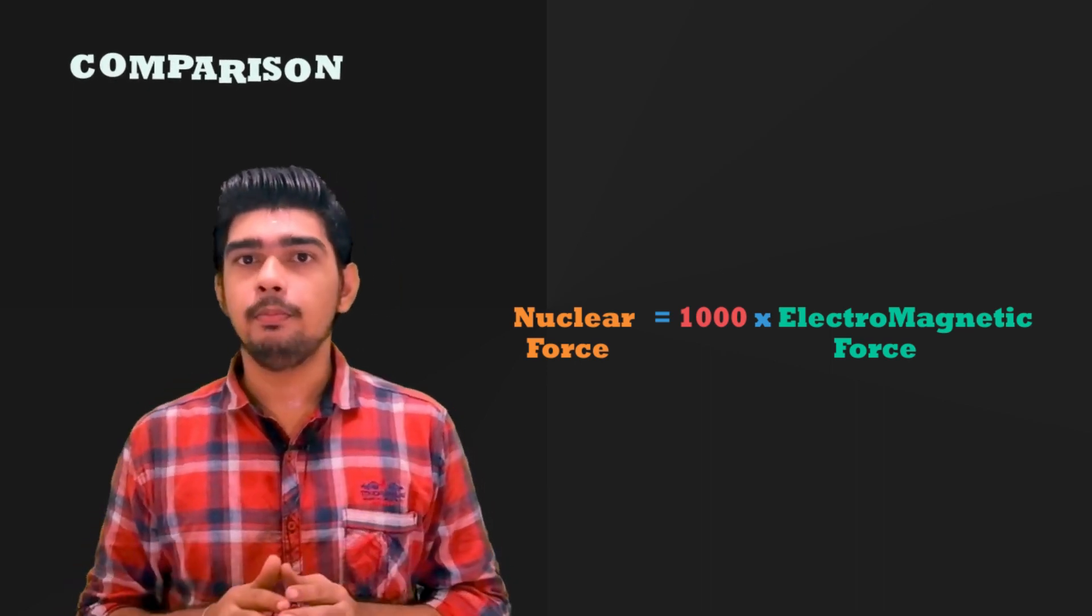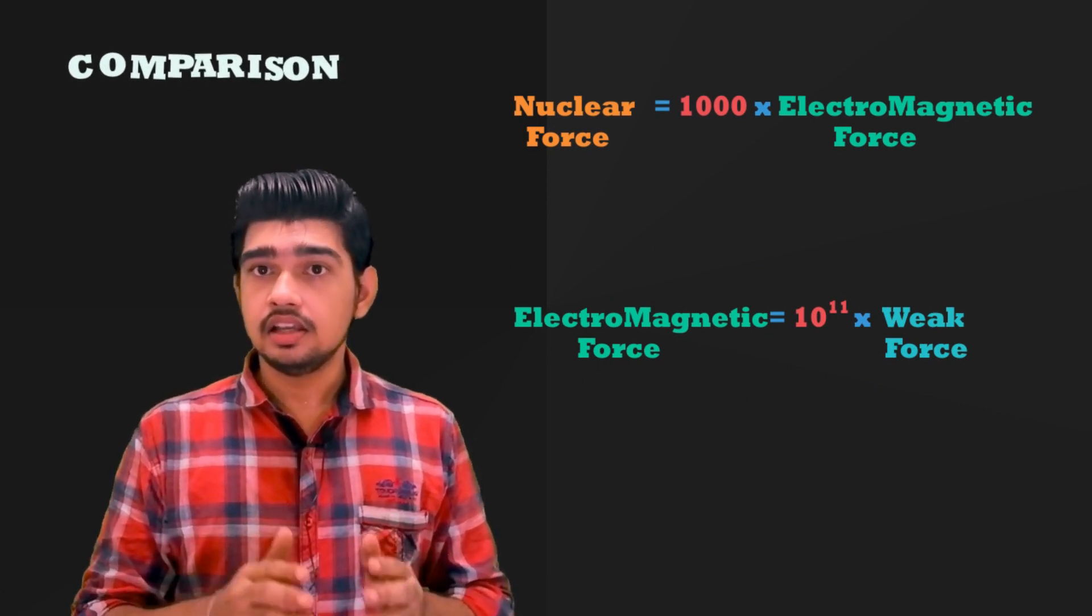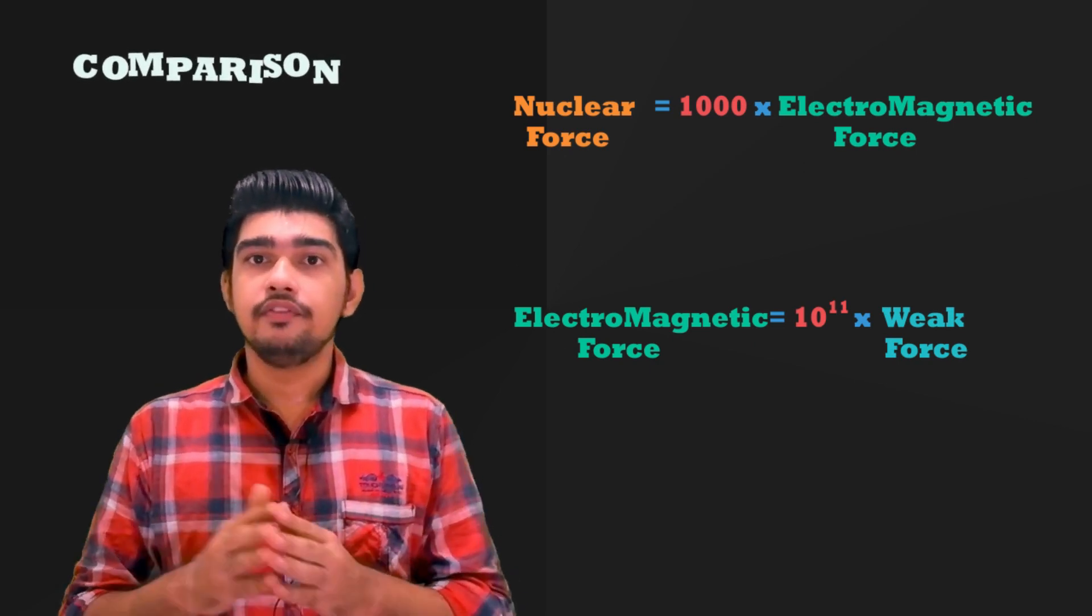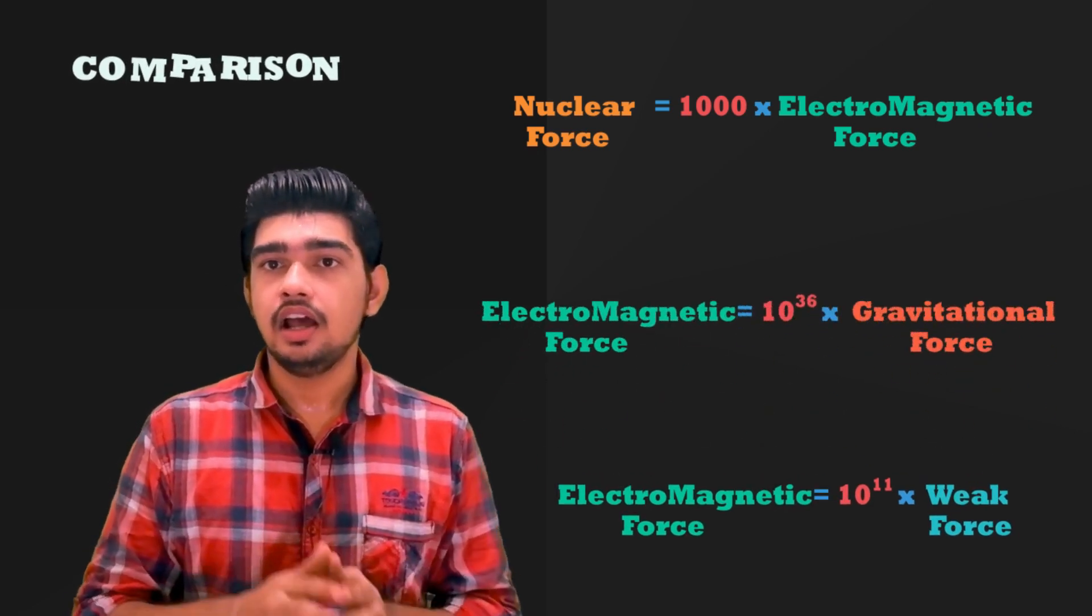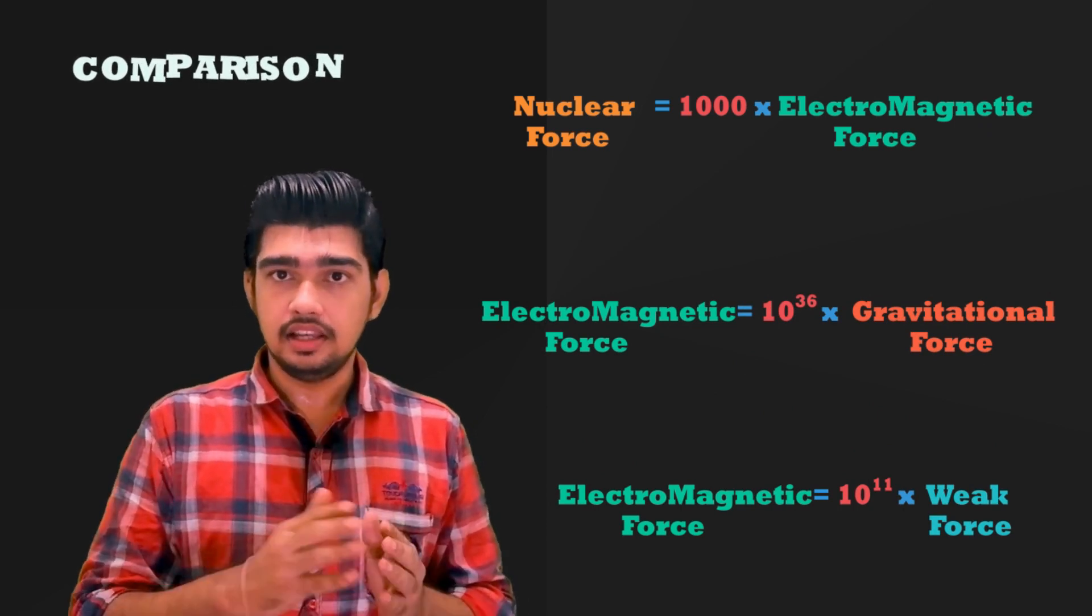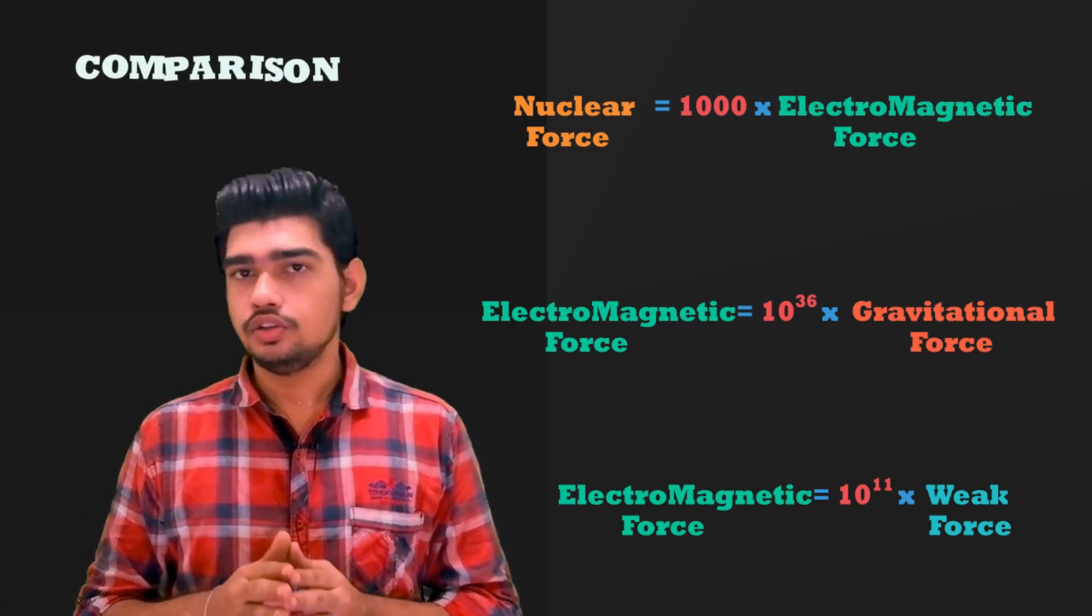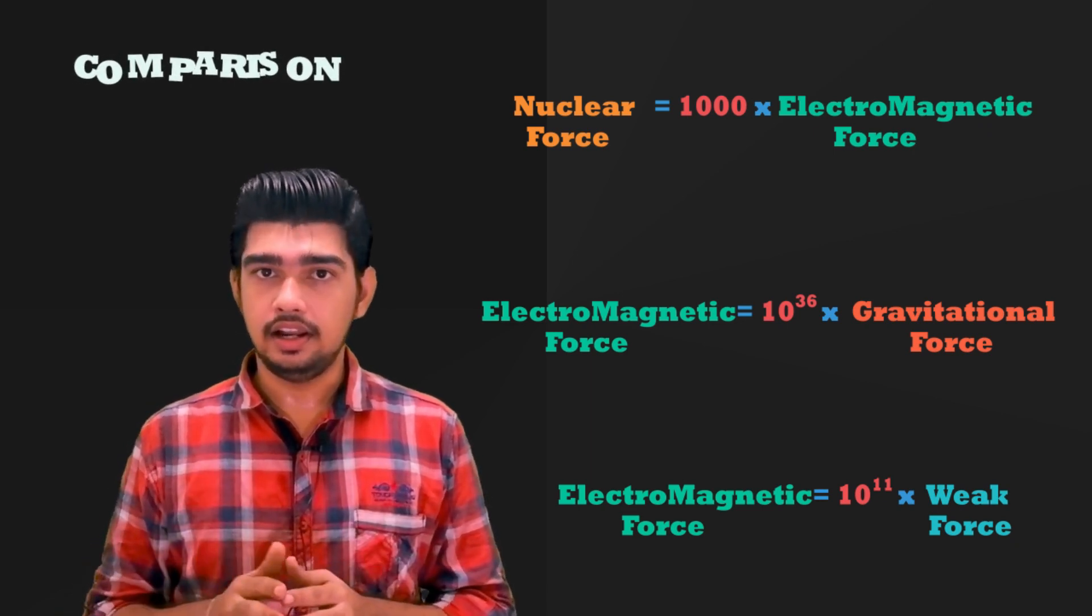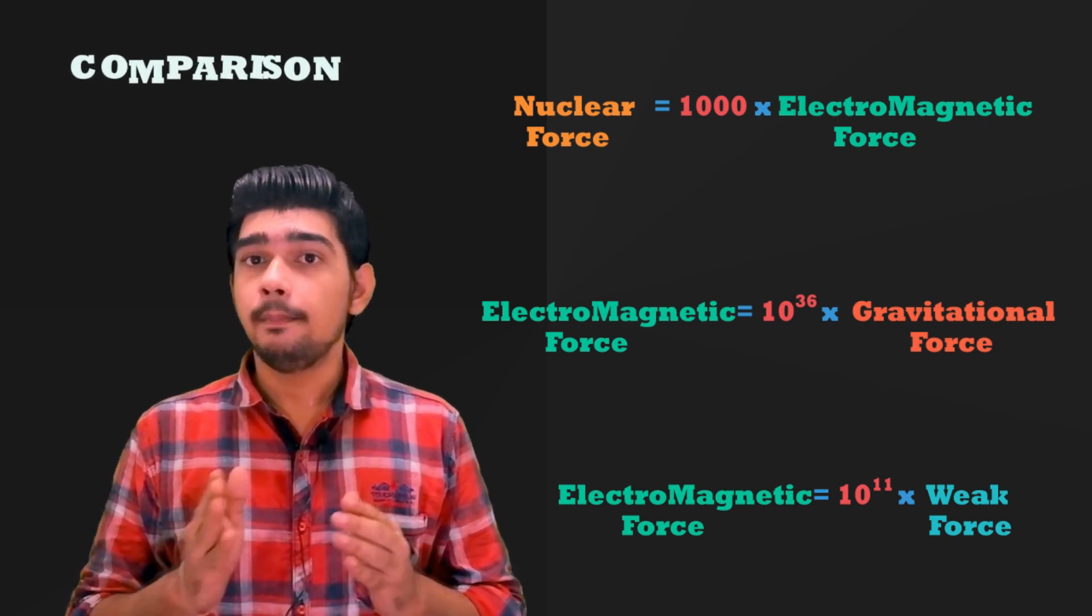Next, let us compare electromagnetic interaction and weak interaction. Electromagnetic interaction is 10 to the power of 11 times greater than weak interaction. And then let us compare electromagnetic interaction and gravitational force. The electromagnetic interaction is equal to 10 to the power of 36 times gravitational interaction. So here we can find that nuclear interactions are stronger than all other interactions. The carrier particle responsible for this interaction is pi-meson.